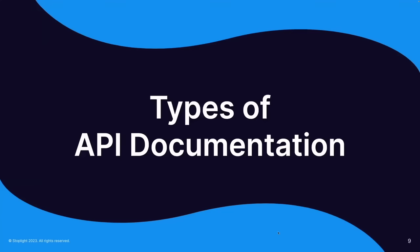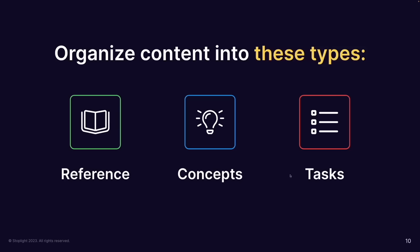There are really three high-level types in API documentation. The first is reference material — the encyclopedia of how to use the API. When you already know what it does and you're ready to write code, reference is where you go. If you only document in reference format, though, you're missing something. Almost more important are the concepts: what does this API do in simple terms?